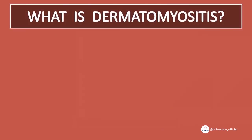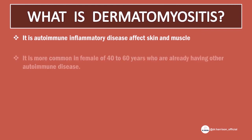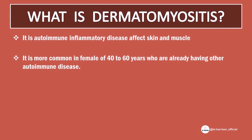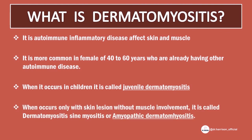What is dermatomyositis? It is an autoimmune inflammatory disease that affects skin and muscle. It is more common in females aged 40 to 60 years who already have other autoimmune diseases. When it occurs in children, it is called juvenile dermatomyositis. When it occurs only with skin lesions without muscle involvement, it is called dermatomyositis sine myositis or amyopathic dermatomyositis.